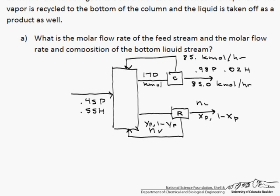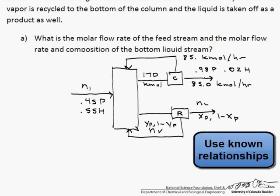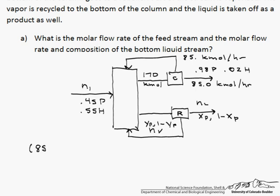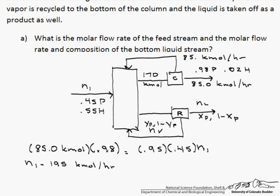So one of the things that we are told is that the overhead product, which we will call n sub 1, contains 95 percent of the pentane fed to the column. So our overhead product, which is 85 kilomoles per hour, the amount of pentane in that is 98 percent of it, and that is going to equal 95 percent of the pentane, which is 0.45 times n1 fed to the column. That piece of information allows us to solve for our n1, which is 195 kilomoles per hour. That is the molar flow rate of the feed stream.